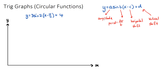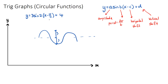First, we look at the a value — our amplitude. For our function, a is three, which means the function will go up and down three units from its midpoint. There is also a formula to work out amplitude if you're not given the original function: it's the total distance from the max to the min, divided by two. So we know our amplitude is going to be three.